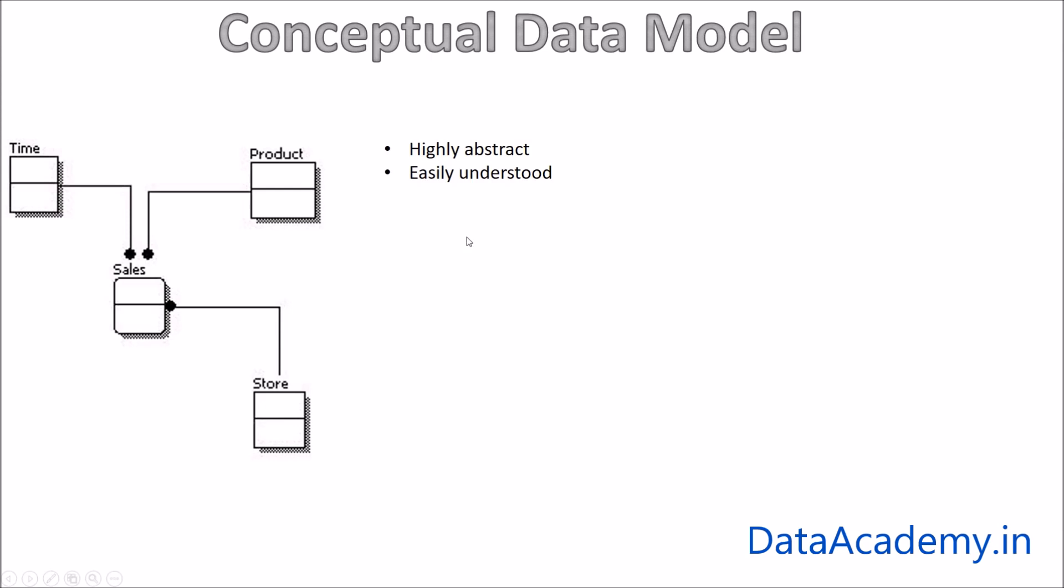It is easily understood, so whether the user is a technical or a non-technical person, it's easy for anyone to understand what this model is about. So as you can look at this diagram, it's easy to say that there are four main entities: